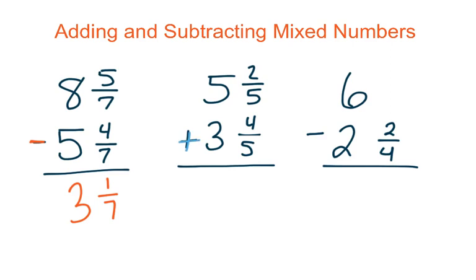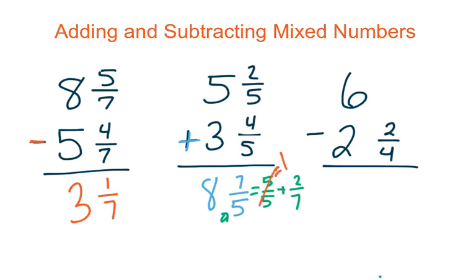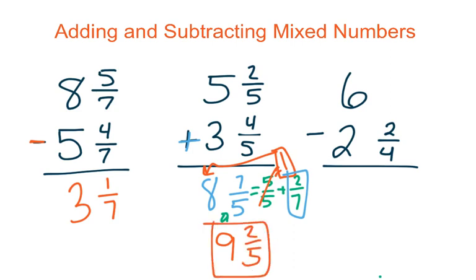This next problem is an addition problem, so I'll add. When I add my fractions I'm left with 7 fifths, and then I add my whole numbers and I have 8. I can't leave 7 fifths since it's a fraction greater than 1. So I pull out my whole — 5 fifths, since my denominator is 5, a whole equals 5 fifths — and then 5 plus 2 gives me 7. I rewrite: 5 fifths equals 1 whole, so 1 plus 8 gives me 9, and my 2 fifths comes down. My final answer is 9 and 2 fifths.